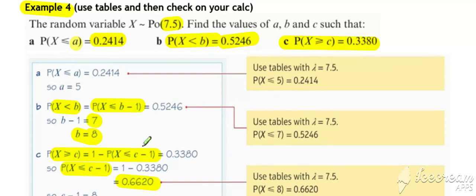We need to do a little bit of rearranging of the inequality first before we're ready to pick the value off the tables. Now we can look at that probability, see what value it corresponds to in the table, which is eight, and because that represents c minus one, c must be equal to nine.